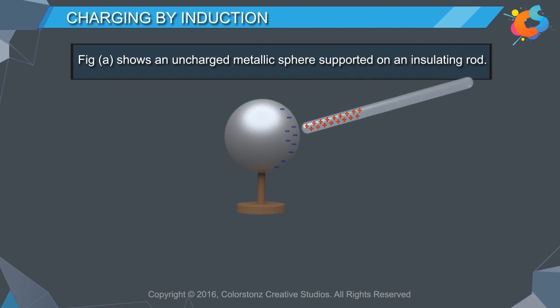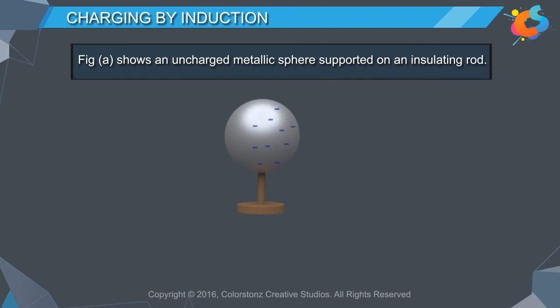When the plastic rod is taken away, the negative charge gets distributed uniformly over the sphere. It is to be noted that the charge induced on a neutral body is always opposite to that of the charged body inducing the charge.